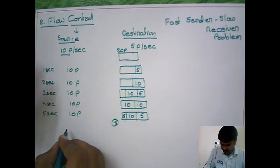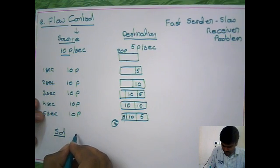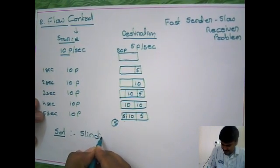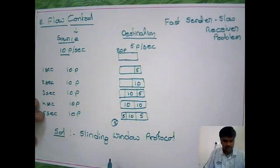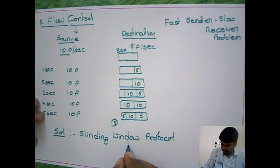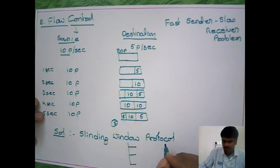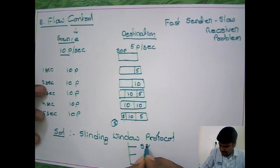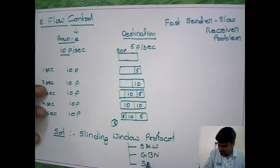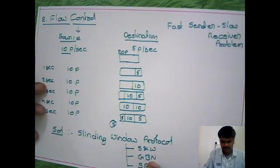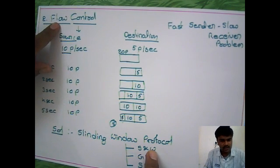The solution to the fast sender, slow receiver problem is the Sliding Window Protocol (SWP), which controls the flow. The SWP has three techniques: Stop and Wait, Go-Back-N, and Selective Repeat Protocol.